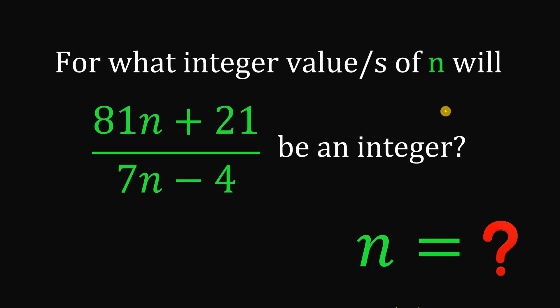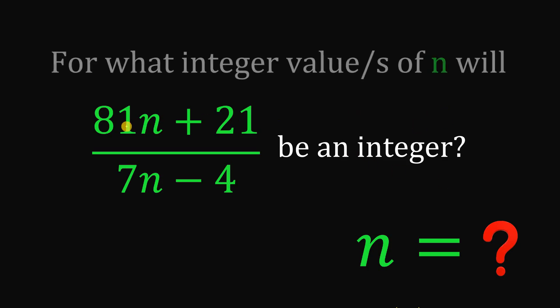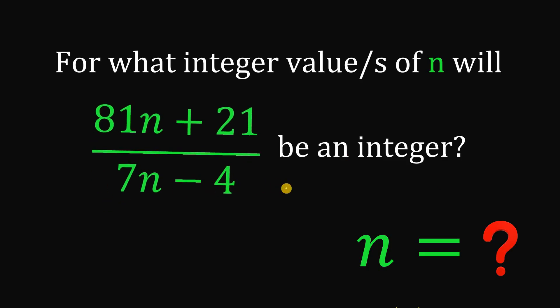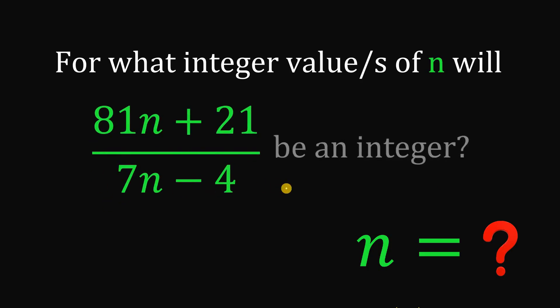For what integer value or values of n will (81n + 21) / (7n - 4) be an integer?